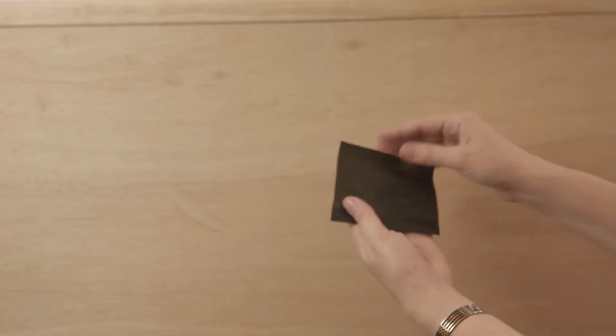On its own, it's very flexible. So in order for it to also maintain its required shape, it is embedded in epoxy resin and baked in the autoclave. This results in a piece of solid material such as this.